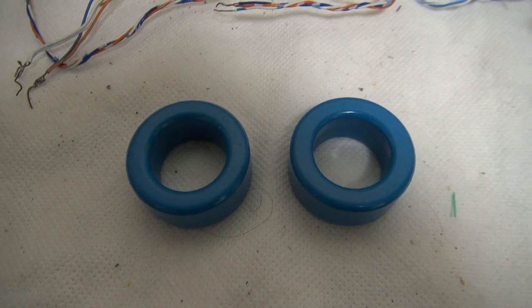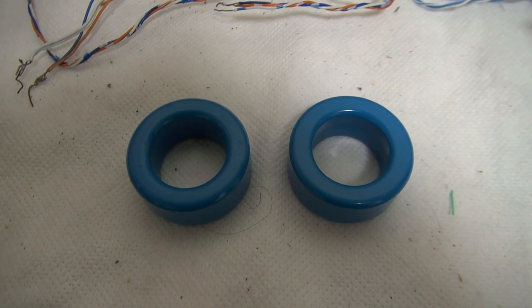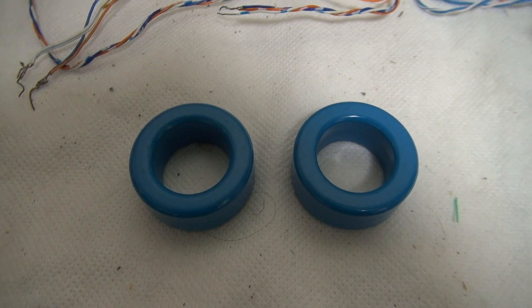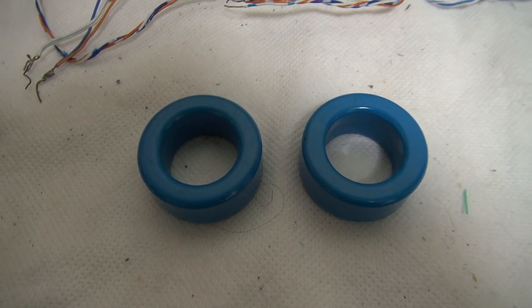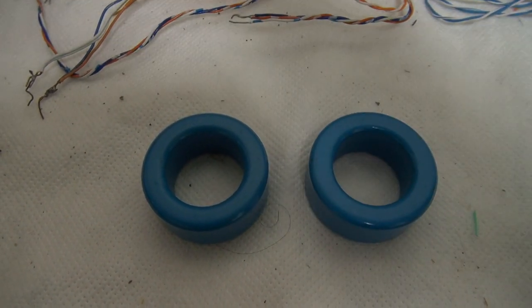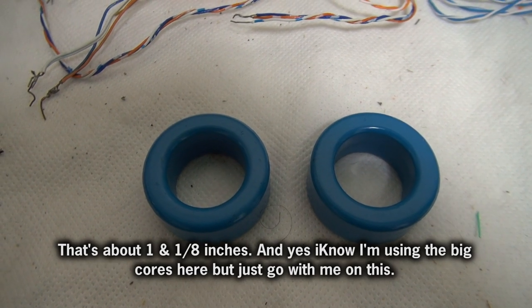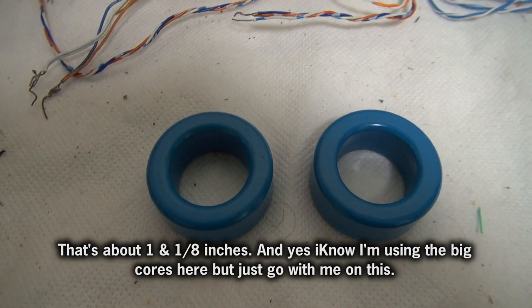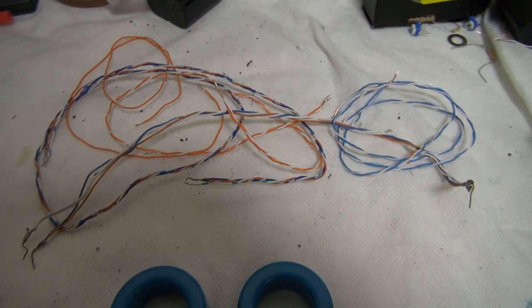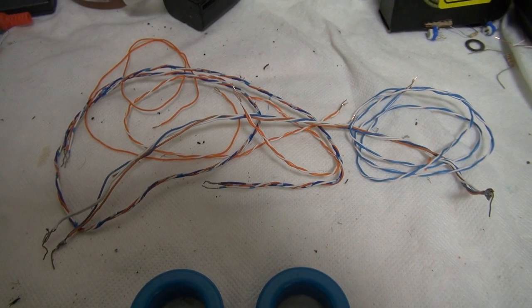So, when it comes to buying cores for gate drive transformers, I suggest buying cores made out of N30 grade material, an outer diameter of about three centimeters. Sorry for American viewers, I don't know what that is in inches. And, of course, using single-strand telephone wire to make the windings.